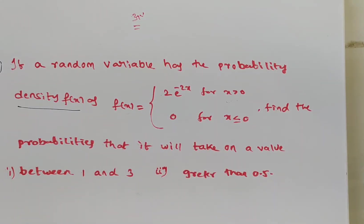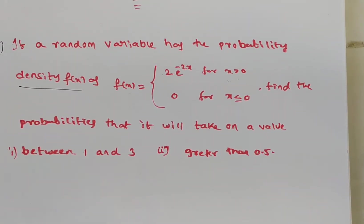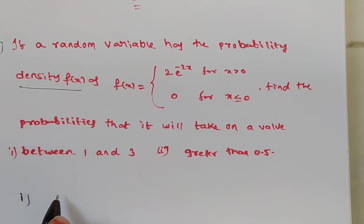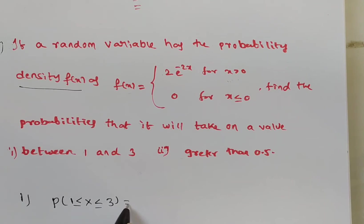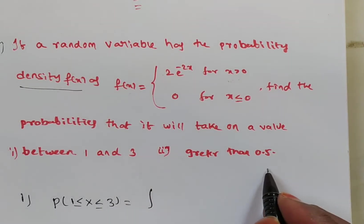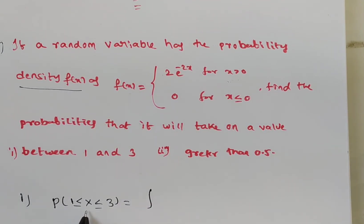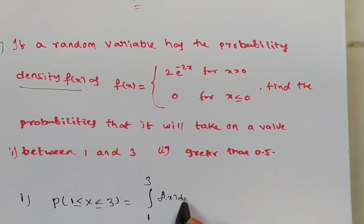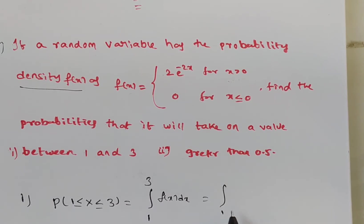Now we solve the probability between 1 and 3. The probability that the variable takes a value between 1 and 3 is P(1 ≤ X ≤ 3). For a discrete random variable we would sum P(X=1) + P(X=2) + P(X=3), but here it is continuous, so we write the integral from 1 to 3 of f(x) dx.